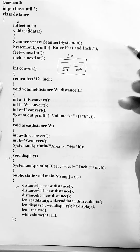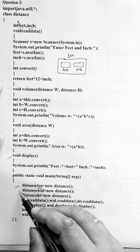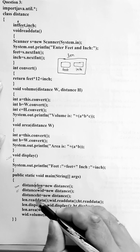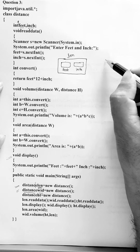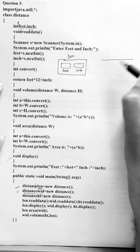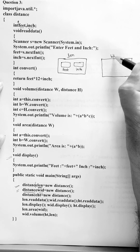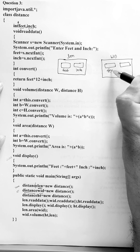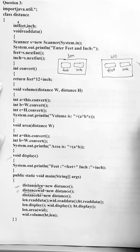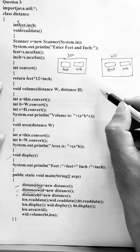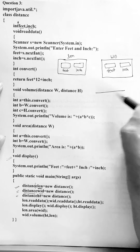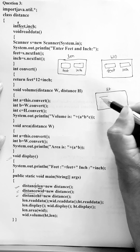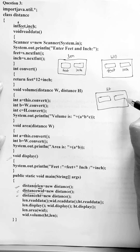So feet and inch are the two data members of the length object. In the same way, we move to the next line of main. The next line says: distance width. So again one more object will be created — width — which will also have two data members: feet and inch. And in the same way, in the third line, one more object is created — ht, meaning height. So one more object will be created with name ht, and it will also have two data members for feet and inch.